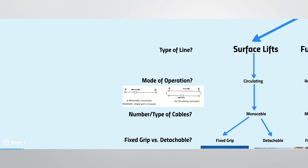Circulating ropeways are like a playground merry-go-round, where the direction of movement does not change during normal operation. The number and type of cables includes mono cable, where the lift only has one rope, and bi-cable and tri-cable systems, where the lift has one moving rope called the haul rope that carriers are attached to, and one or more stationary cables called track ropes that are used to suspend the carriers.